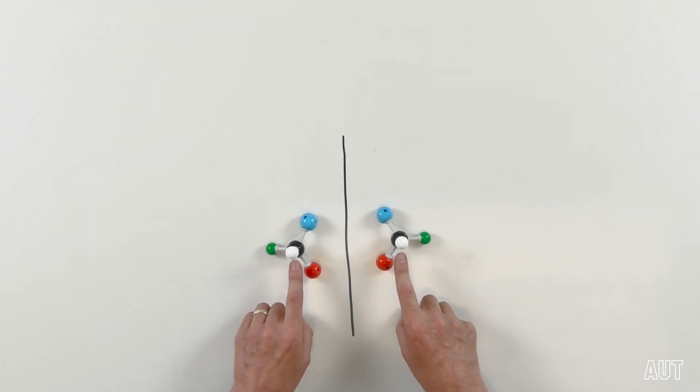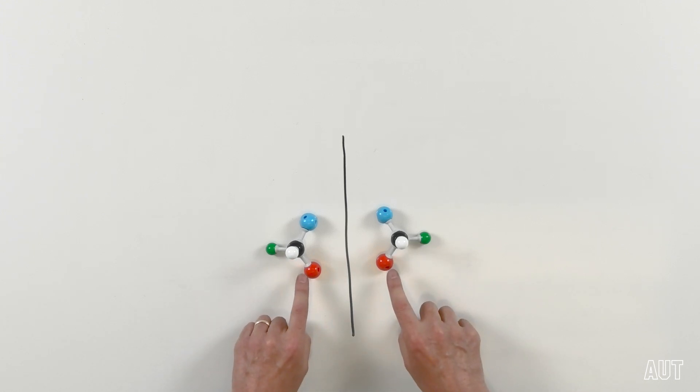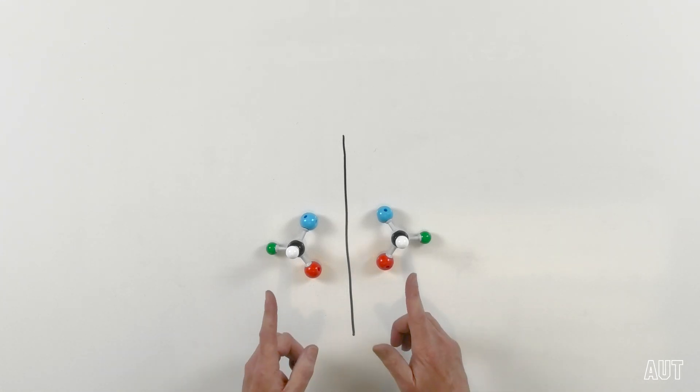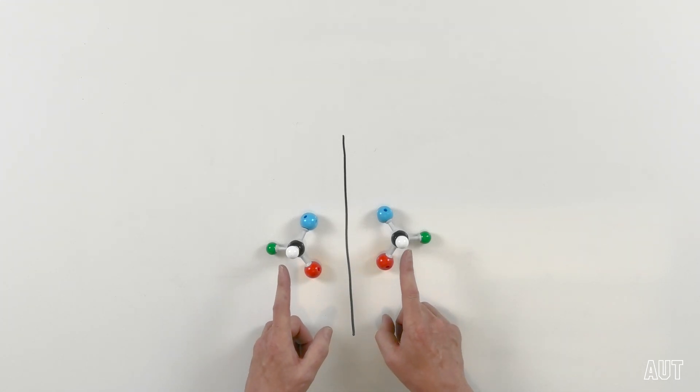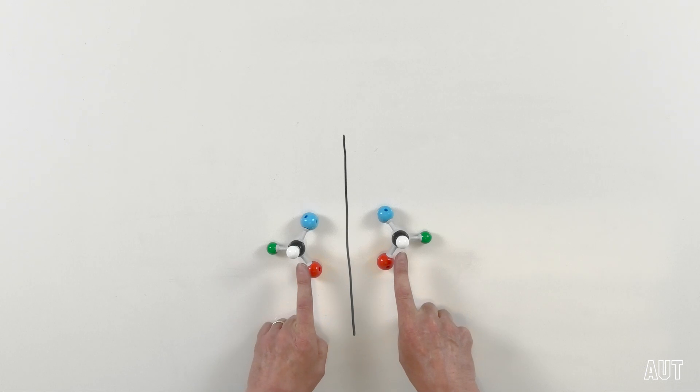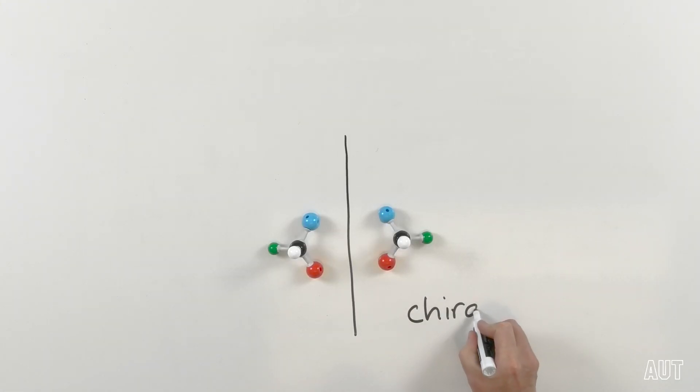It appears that if we have a carbon atom attached to four different groups, what we end up with are non-superimposable mirror images. Any carbon that has that particular property of being attached to four different things, we give — unfortunately — a variety of names. They are all synonymous. We call them either chiral centres, chiral carbons, or, probably the one you should use, stereocentres.